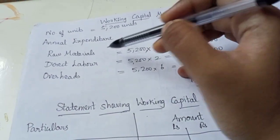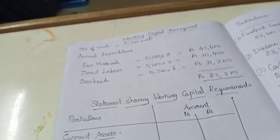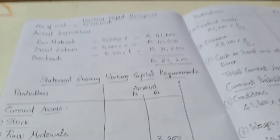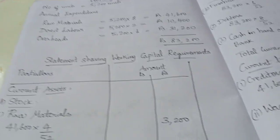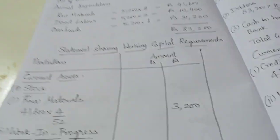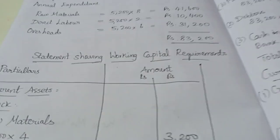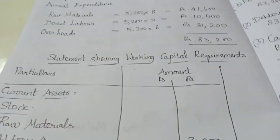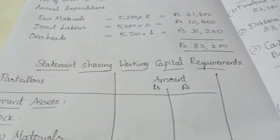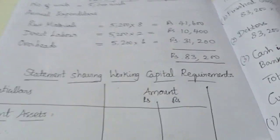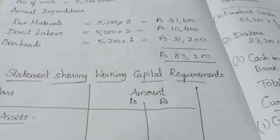If you look at raw materials, we can get the annual expenditure of 8 per unit. If you look at direct labor, you can get 2 per unit.